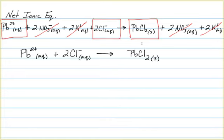When we write this equation out using what's left behind, we will have the lead-2-ion in aqueous solution reacting with two moles of chloride ion in aqueous solution, producing one mole of lead-2-chloride as a solid. This is our net ionic equation — it represents only the things that are changing chemically. It really doesn't matter where the lead ions came from or where the chloride ions came from; as long as we have aqueous solutions of each and mix them together, the lead and the chloride will react to form solid lead-2-chloride.